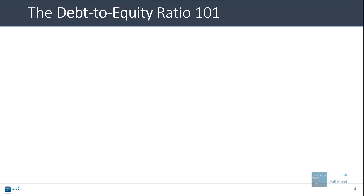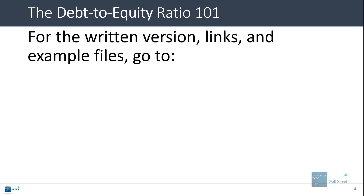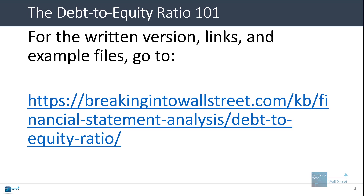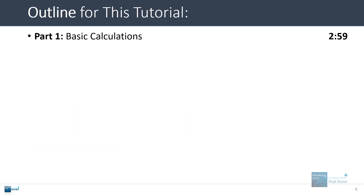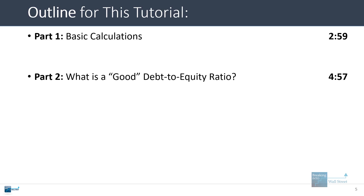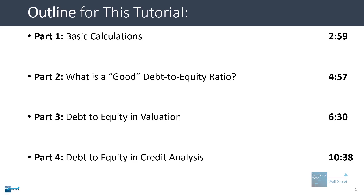I'm going to go into all these topics in more detail. If you want the written version, the Excel files, and other documents, you can go to the URL on screen — it's our financial statement analysis page for the debt to equity ratio. I'll pin this URL below the comments so you can click on it as the first comment and get everything there. In this tutorial, I'm going to cover the basic calculations first, then we'll go through what a good debt to equity ratio means, then debt to equity in valuation, and debt to equity in credit analysis with some things to watch out for.